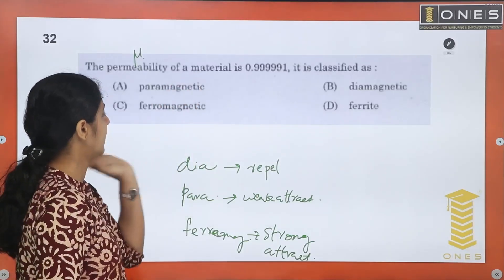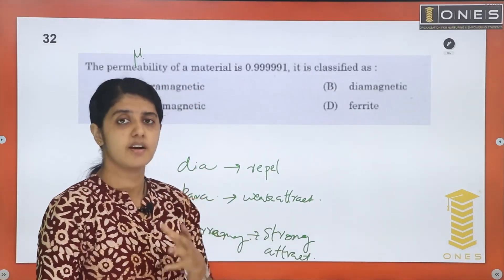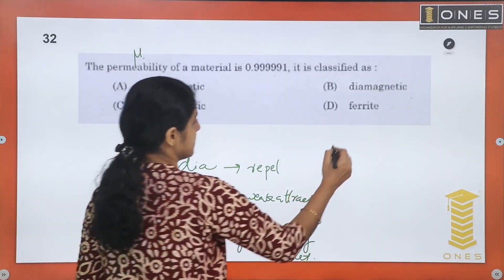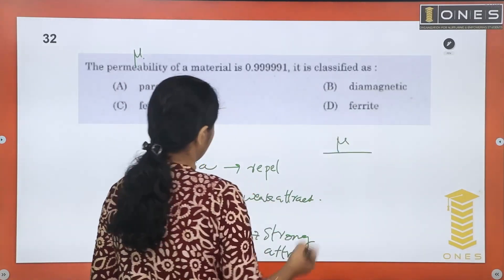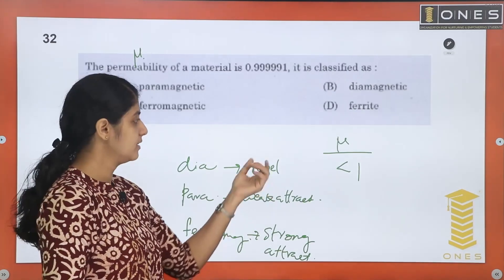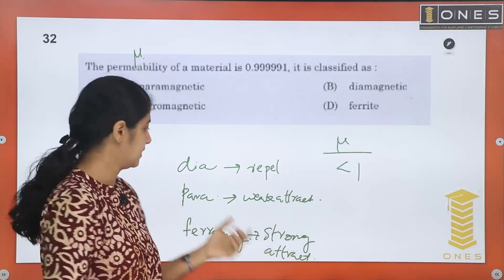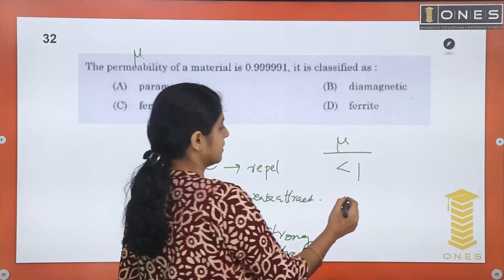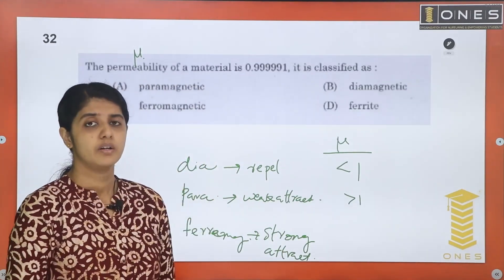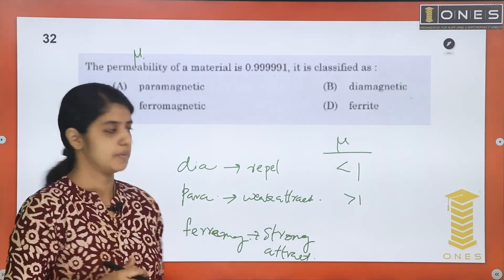Looking at the value of permeability (mu): for diamagnetic materials, permeability is less than 1. For paramagnetic materials, permeability is slightly more than 1. For ferromagnetic materials, permeability is very high — much greater than 1.